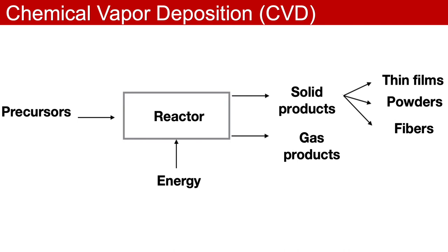Next, let's learn about chemical vapor deposition or CVD. Among the vapor-based coating techniques, CVD is perhaps the technique that can offer many unique advantages. In CVD, films are produced from the precursor material through a series of chemical reactions in a proper reactor. Usually, heat, light or plasma is applied as an energy source to initiate the chemical reactions, and the products obtained can be either thin films, powders or fibers.